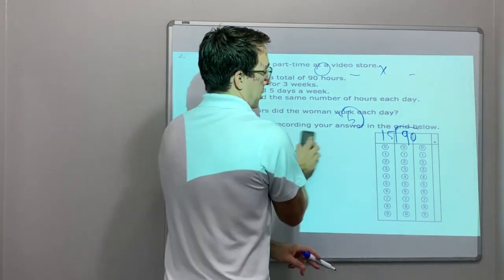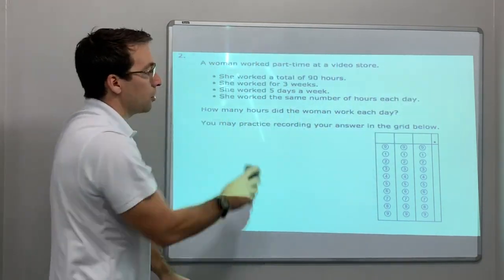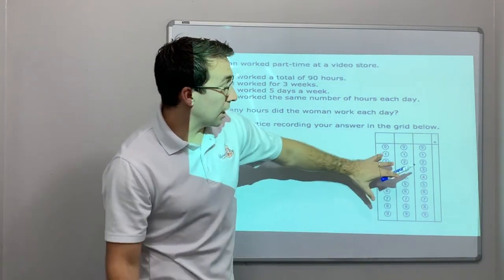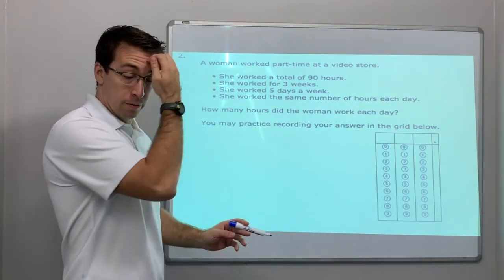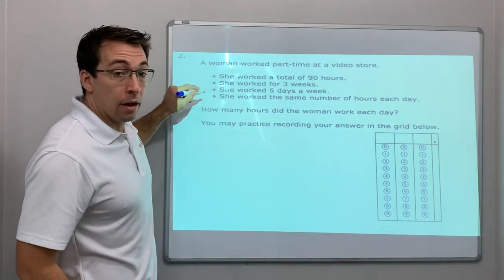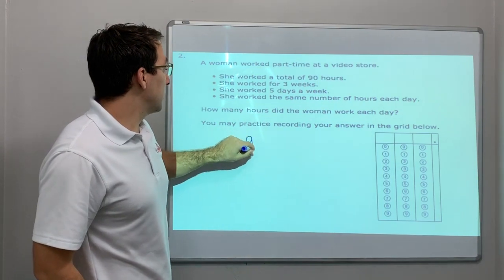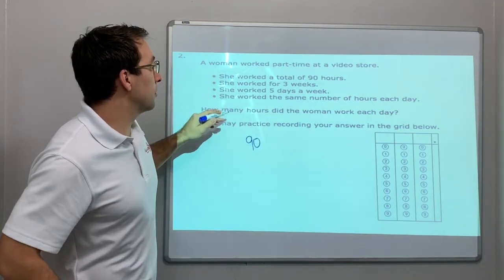Here's another bubble question. And here I'm going to practice. This is what you're going to see on some questions. You're going to actually see a grid with the bubble. A woman worked part-time at a video store. She worked a total of 90 hours. So this is the exact same question.